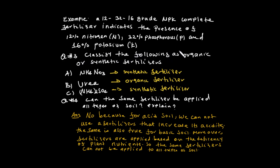Question 3: Classify fertilizers as organic or synthetic. Urea is considered an inorganic synthetic fertilizer — it is prepared from inorganic materials and was the first synthetic organic compound produced. Ammonium sulfate is also inorganic. These are all classified as artificial or synthetic fertilizers.